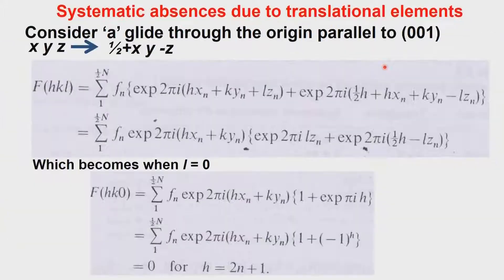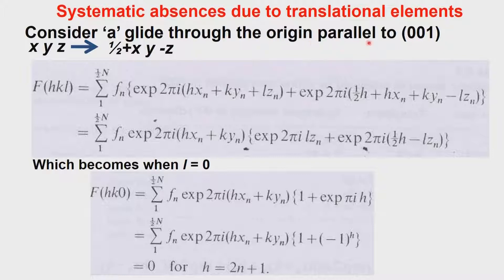Having seen this, we now go and see what systematic absences arise due to the presence of translational components in the symmetry of the space group. We have seen the lattice type. Now let us consider a space group with an A glide — for example, a primitive lattice with an A glide. If there is an A glide in any of the directions associated with x, y, z — suppose there is a glide going through the origin and parallel to the plane 001 — then every point x, y, z will give rise to half+x, y, z-bar.